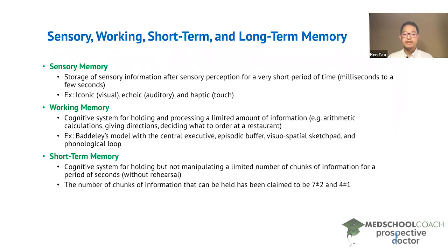Next, we have short-term memory. Short-term memory is the cognitive system for holding, but not manipulating, a limited number of chunks of information for a period of seconds. To distinguish working memory from short-term memory: for working memory, you are holding and processing information. For short-term memory, you're only holding the information — you're not manipulating it.